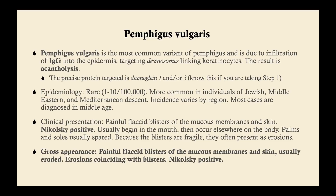Pemphigus vulgaris is rare, about 1 to 10 per 100,000, but it's much more common in individuals of Jewish, Middle Eastern, and Mediterranean descent. The prevalence in Jerusalem is actually 100 per 100,000, quite a significant difference. The incidence varies by region, and most cases are diagnosed in middle age.